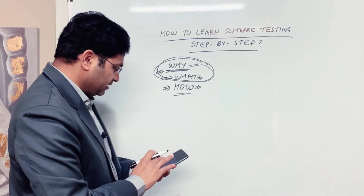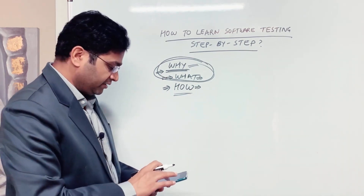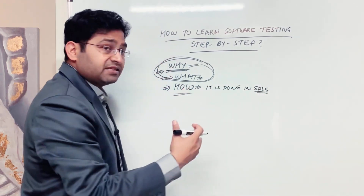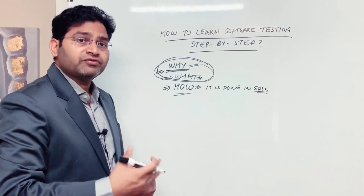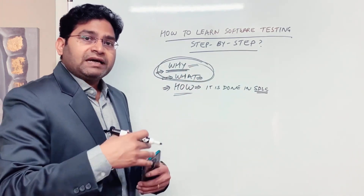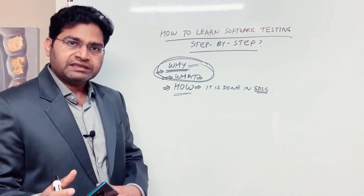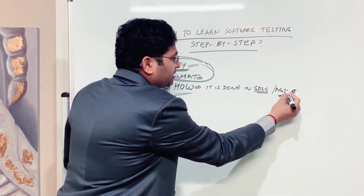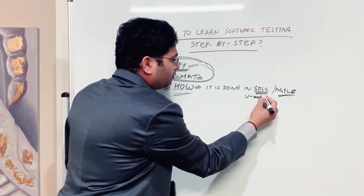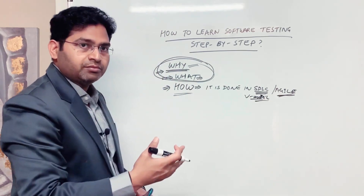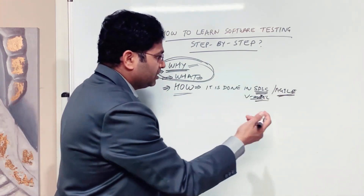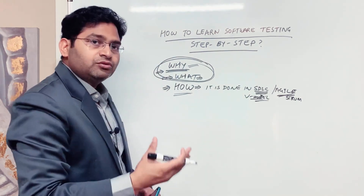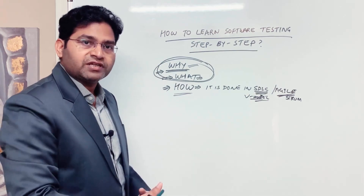The first thing to understand in the how part is how software testing is done within the Software Development Life Cycle, or SDLC. There have been different software development models: waterfall, V-model, spiral, and many others that evolved over time. Nowadays it's Agile — most product development happens in Agile, usually using Scrum. Some organizations still use V-model or waterfall, but that's very rare.